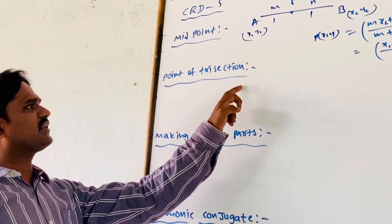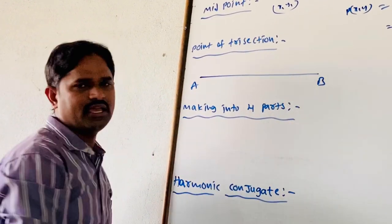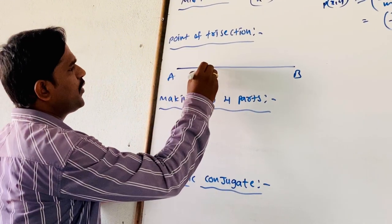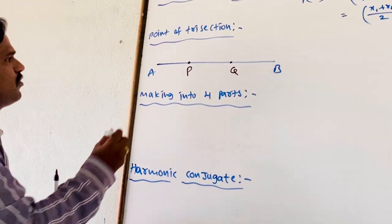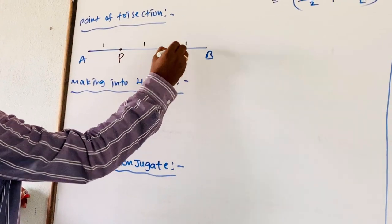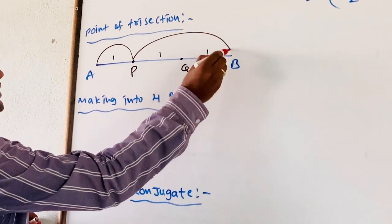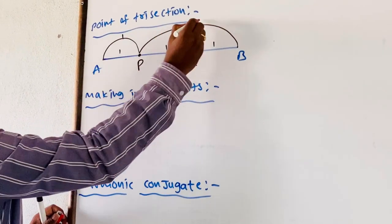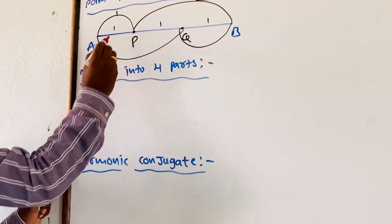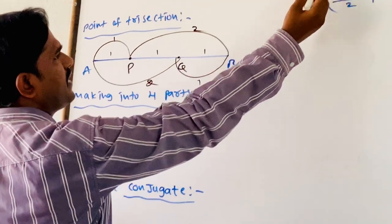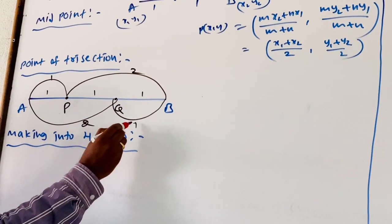Similarly, we can find the point of trisection. What is meant by trisection? AB is a line segment where the points P and Q divide AB into 3 equal parts. P divides AB in the ratio 1 is to 2. Similarly, Q divides AB in the ratio 2 is to 1. By using the section formula, we substitute 1 to 2 for P, and 2 to 1 for Q, using internal division.